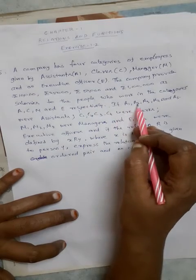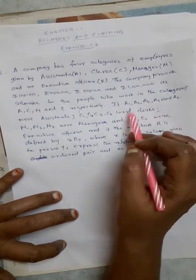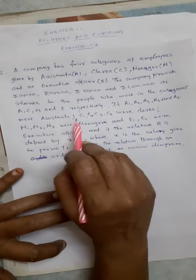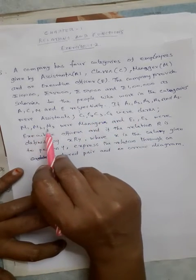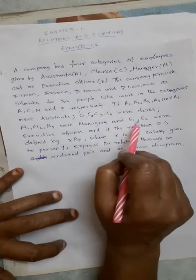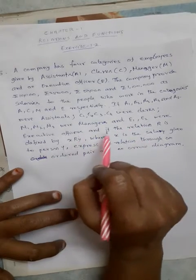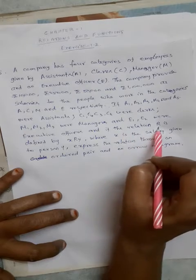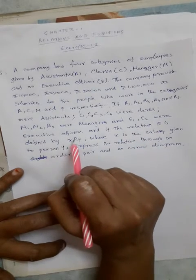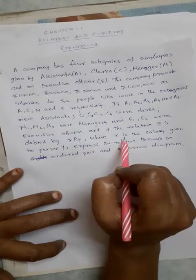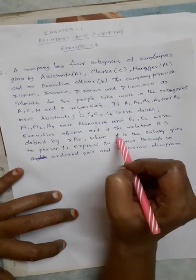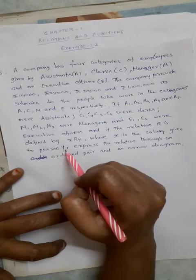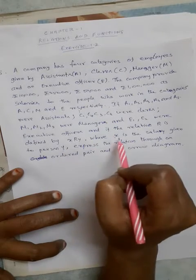There are A1, A2, A3, A4, and A5, five assistants work. C1, C2, C3, C4 are clerks. M1, M2, M3 are managers, and E1, E2 are executive officers. The relation R is defined by X R Y, where X is the salary given to person Y. Let's see how the relationship is used.